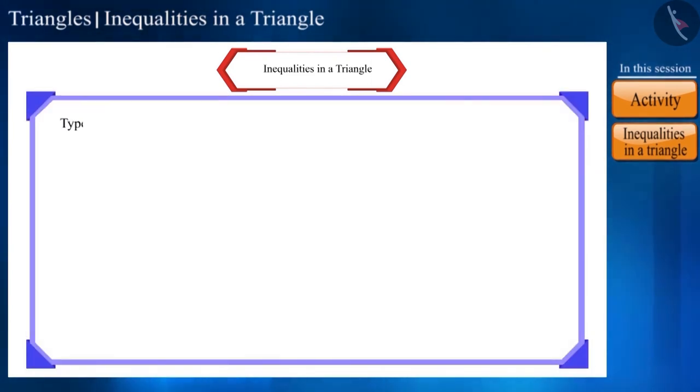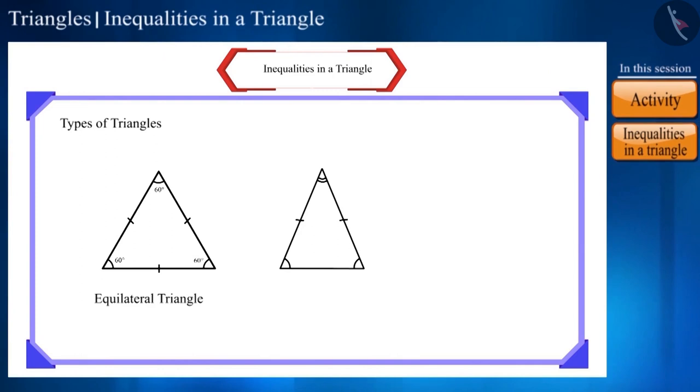Friends, we know that there are different types of triangles like equilateral triangle, isosceles triangle and scalene triangle.